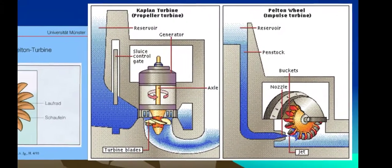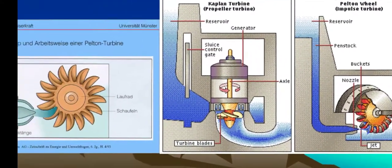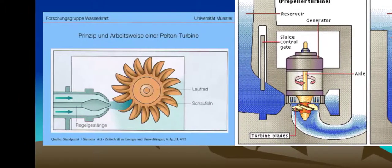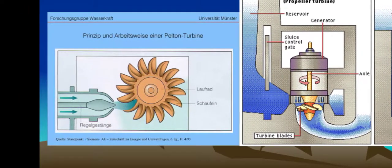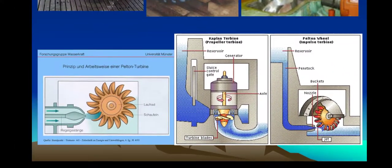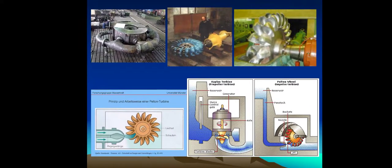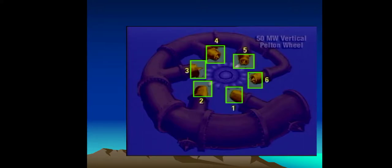Turbine variants shown include: tubular turbine, propeller turbine, and a 50 megawatt vertical Pelton wheel.